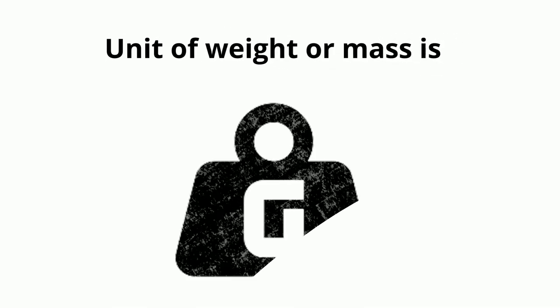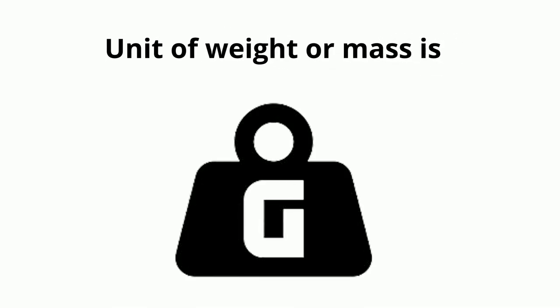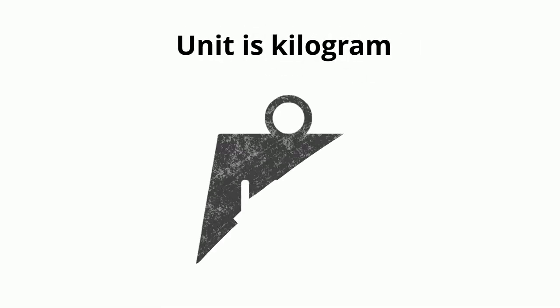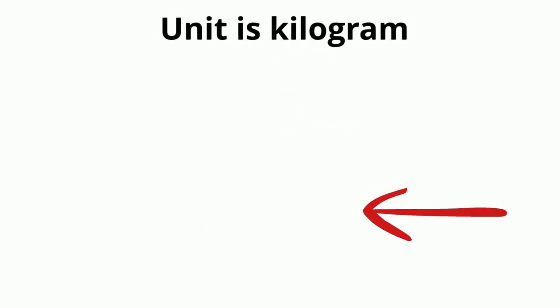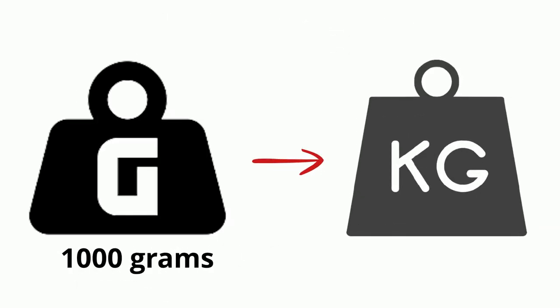The standard measuring unit of weight or mass is gram. In short, we can write it as g. Another measuring unit is kilogram. In short, we can write it as kg. There are hundred grams in one kilogram.